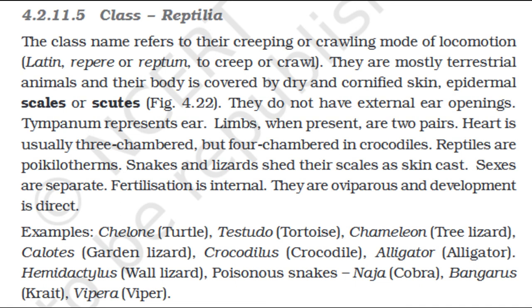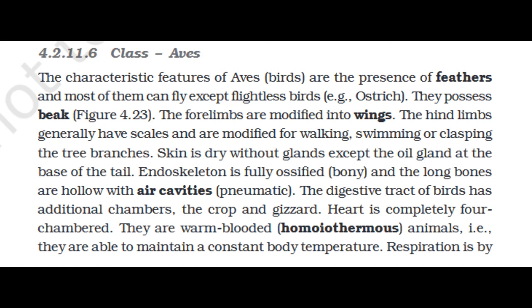Section 4.2.11.5: Class Reptilia. The class name refers to their creeping or crawling mode of locomotion (Latin: repere/reptum, to creep or crawl). They are mostly terrestrial animals and their body is covered by dry and cornified skin, epidermal scales, or scutes. They do not have external ear openings; the tympanum represents the ear. Limbs, when present, are two pairs. The heart is usually three-chambered, but four-chambered in crocodiles. Reptiles are poikilothermic. Snakes and lizards shed their scales as skin cast. Sexes are separate; fertilization is internal; they are oviparous and development is direct. Examples: Chelone (turtle), Testudo (tortoise), Chameleon (tree lizard), Calotes (garden lizard), Crocodylus (crocodile), Alligator, Hemidactylus (wall lizard), and poisonous snakes — Naja (cobra), Bungarus (krait), Vipera (viper).